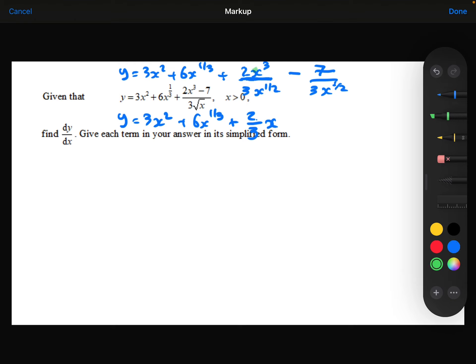Because the x cubed is divided by the x to the power of a half. So 3 take away a half is 2 and a half or 5 over 2.